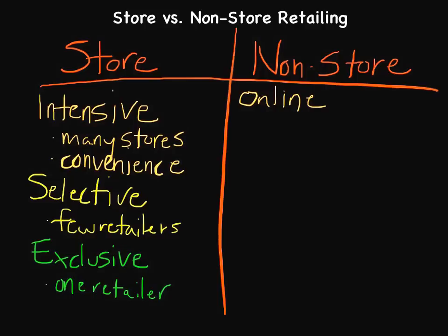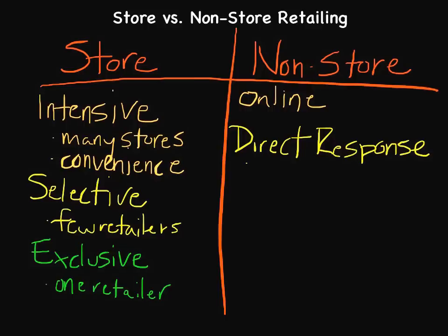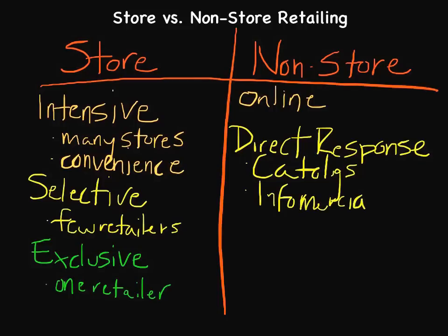Outside of online, we can also utilize what we call direct response retailing. Direct response retailing typically involves utilizing things such as catalogs, home shopping networks, or infomercials more broadly. There's not a physical store you actually go to — typically you see something you like and place an order either over the internet or over the phone. You could even mail in an actual order, although the days of doing that have mostly passed.